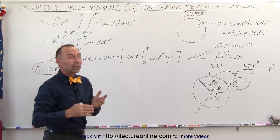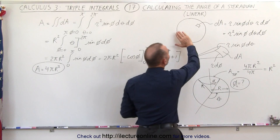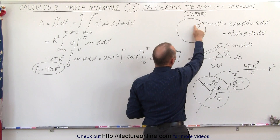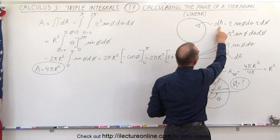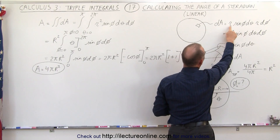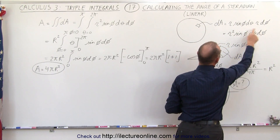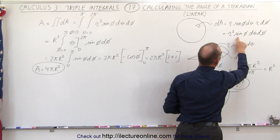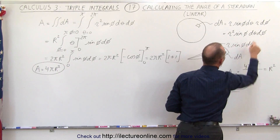To do that, we need to understand how to calculate the surface area of a sphere, and for that we need a small area element. We'll call it dA, and that dA is equal to r sinφ dθ · r dφ, which can be written as r² sinφ dθ dφ.